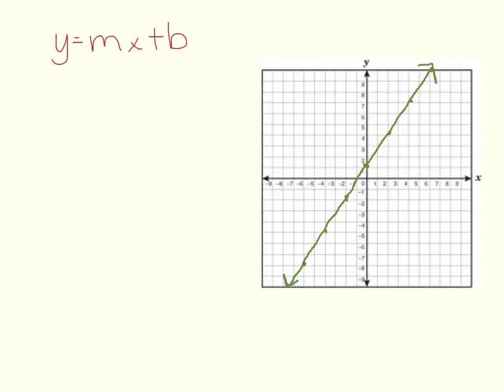First, you want to look at your line and find the y-intercept, where the line crosses the y-axis. In this example, our line crosses the y-axis where y equals 1. So that means our b-value is going to be 1.